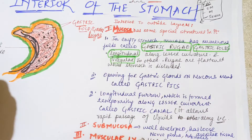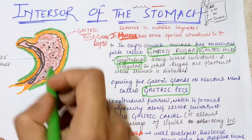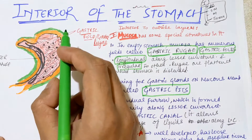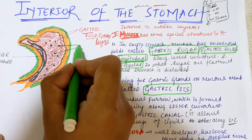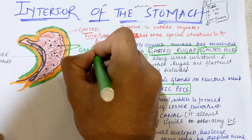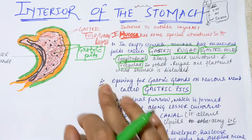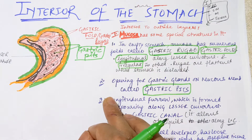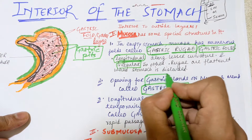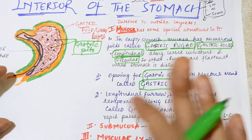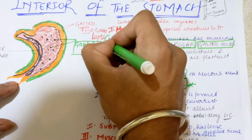The second structure in the mucosa is gastric pits. Pits are simply openings present all around the mucous membrane for the secretion of mucus from the gastric glands. These openings are the entry points for the gastric glands, which are responsible for the secretion of mucus inside the stomach.